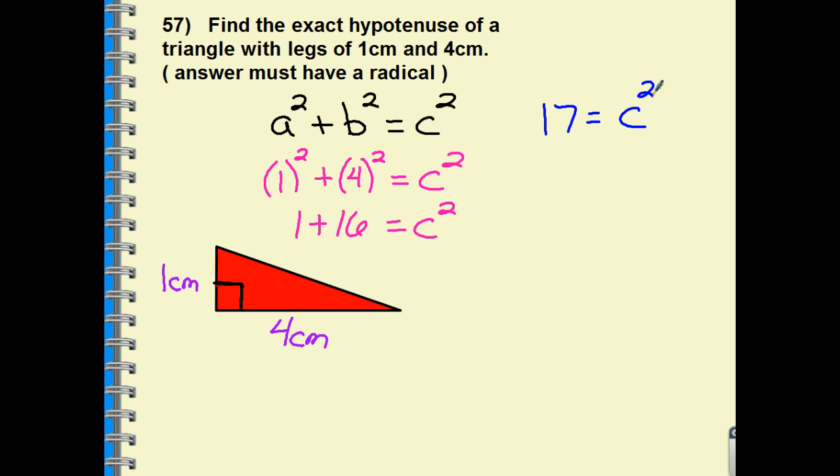And to undo a square in math, if I'm solving for the variable, the opposite of squaring the variable is taking the root, the square root of both sides. So it's kind of like what we do with solving equations. Whatever you do to one side, you do the same to the other. You're balancing it out. So the square root of C squared is what times itself is equal to C squared? Well, C. And what times itself is equal to 17? This is not a perfect square, so we cannot have a decimal as an answer. They want the exact with a radical symbol. So final answer: C is equal to the square root of 17.